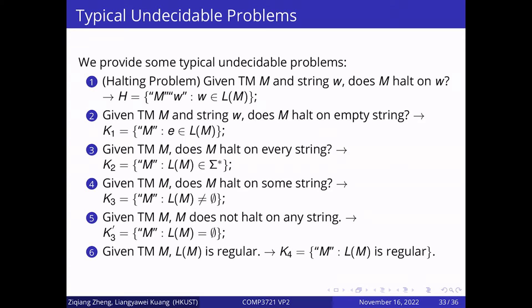Here we can quickly go through the halting problem. The halting problem is defined as follows: Given the Turing machine M and the input string W, does M halt on the input string W. We can convert this problem to the equation H equals {M W | W ∈ L(M)}.